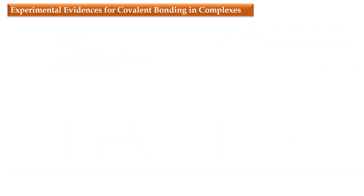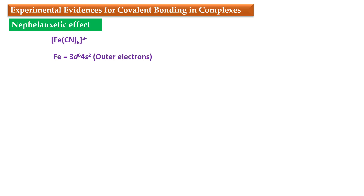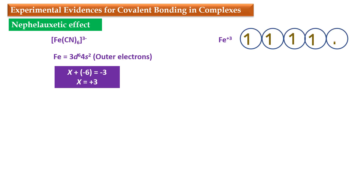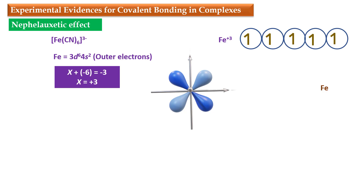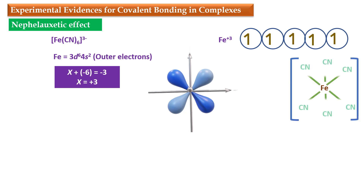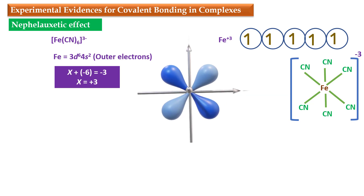Let's move to the second evidence: the nephelauxetic effect. Here I am taking the example of Fe(CN)₆³⁻. Fe has atomic number 26 and its outermost electronic configuration is 3d⁶4s². Here the oxidation state is calculated as +3. If we consider the free metal atom in the +3 oxidation state, it consists of 5 unpaired electrons. In the case of d orbitals, these orbitals are very close to each other, and when electrons are present in these orbitals there is a repulsion between the d-d electrons. It has been observed that d-d electron repulsions are less in the complex metal ion Fe(CN)₆³⁻ than in the free metal ion Fe³⁺.